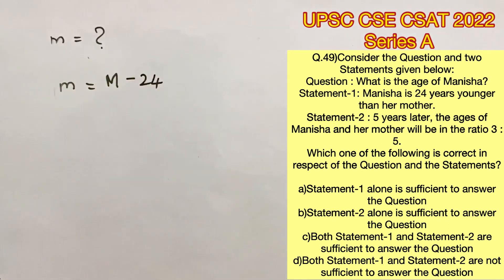The first statement says Manisha is 24 years younger than her mother. So we can represent this in the form of equation as m equals capital M minus 24. With this we cannot find out the age of Manisha.